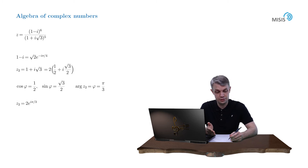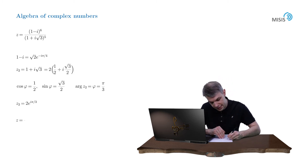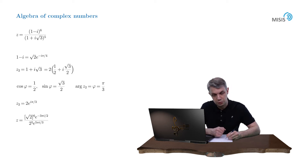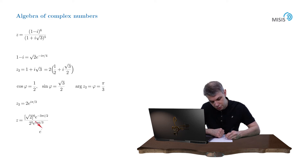Now let's plug in these two representations into our numerator and denominator respectively, to obtain (√2)^6 · e^(−3πi/2) divided by 2^5 · e^(5πi/3). I don't like this 5π/3 — I'd like to represent it as 6π minus π. What it gives me is that now in the denominator I will have e^(2πi − πi/3).